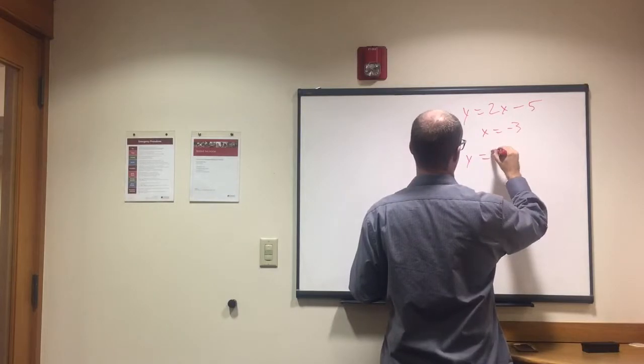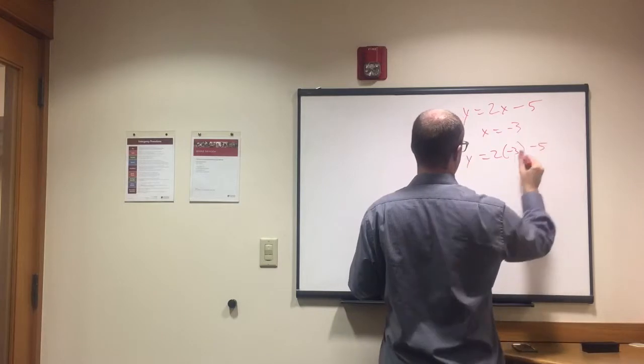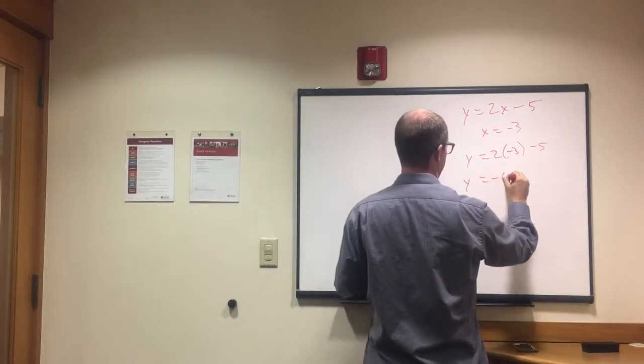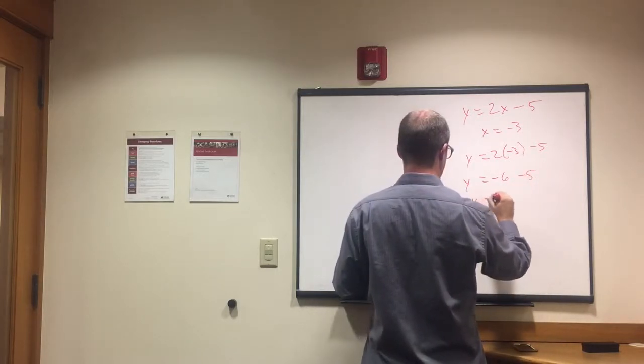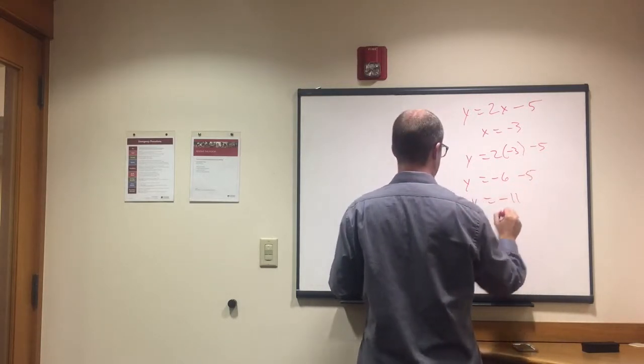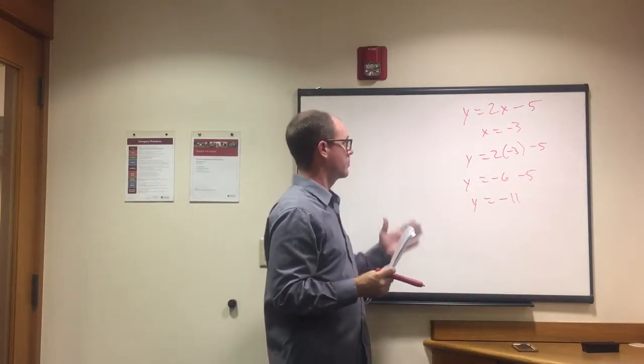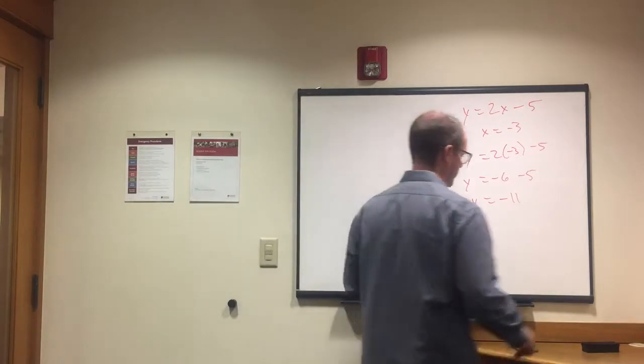y equals 2x, so plug in negative 3 here, minus 5. y equals 2 times negative 3 is negative 6, minus 5 is negative 11. Okay, that would be the first one, fairly straightforward algebra if you're comfortable with that.